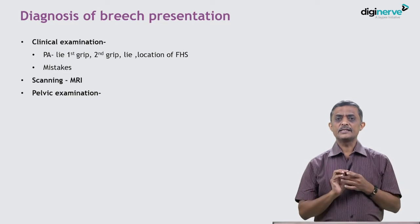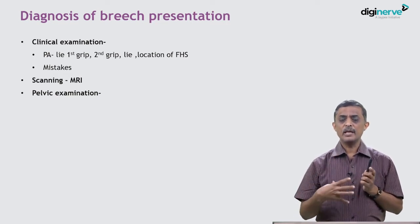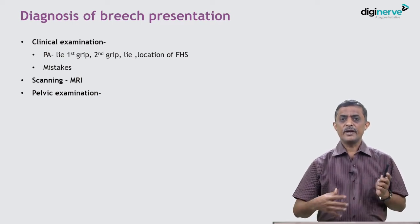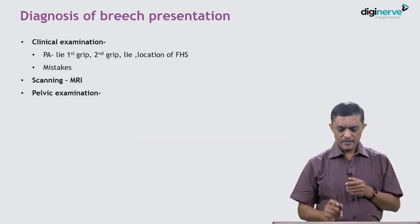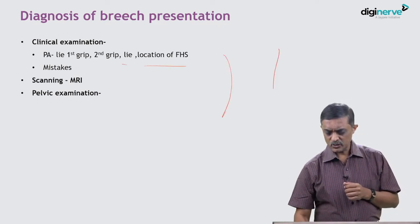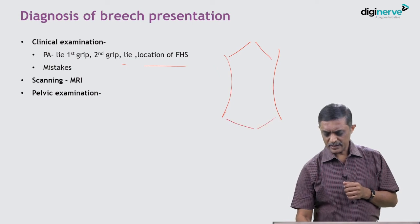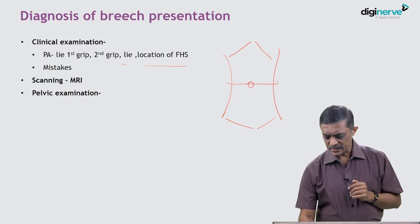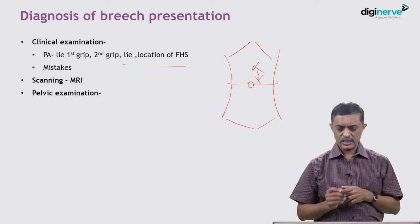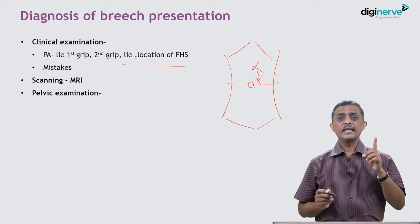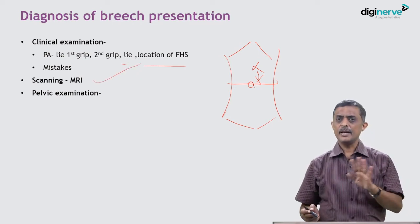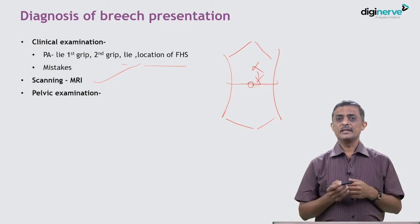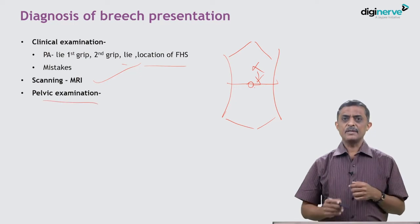Diagnosis of breech is by clinical examination. On fundal grip, you find a ballotable, smaller, globular part; on pelvic grip, a broader, non-independently ballotable, soft mass. Fetal heart sounds are usually heard at or above the level of the umbilicus. Any suspected malpresentation must be confirmed by ultrasound scan. MRI is not mandatory — it is for research purposes only.